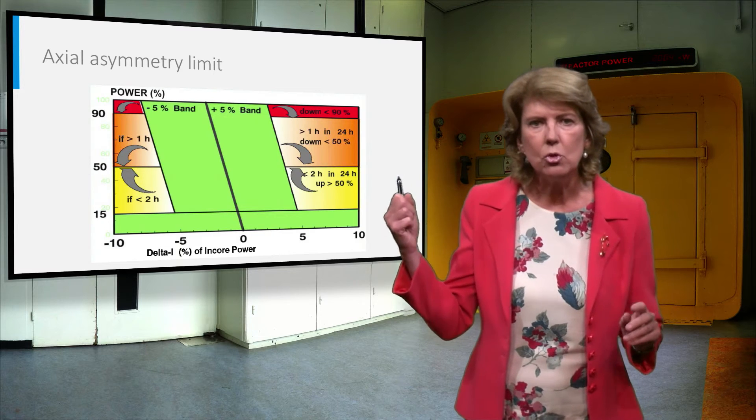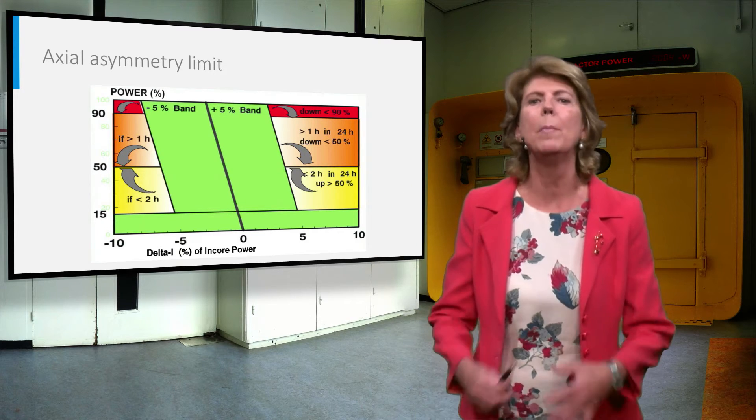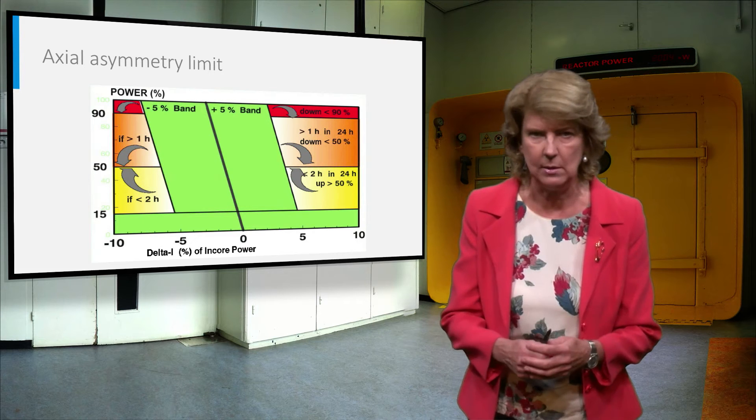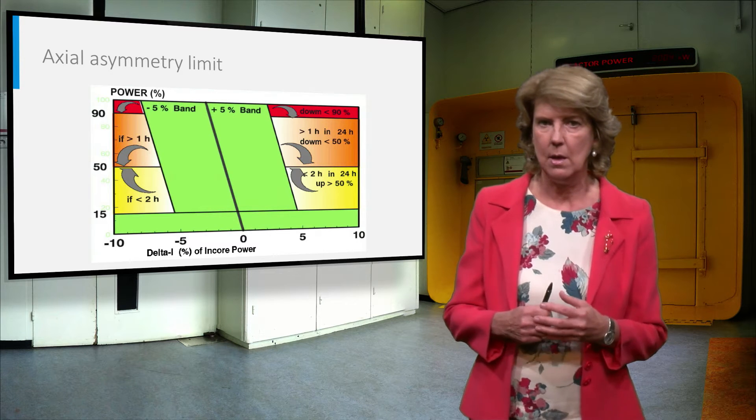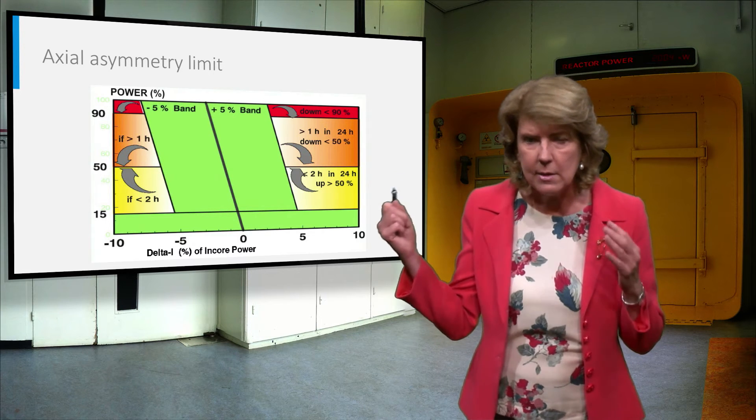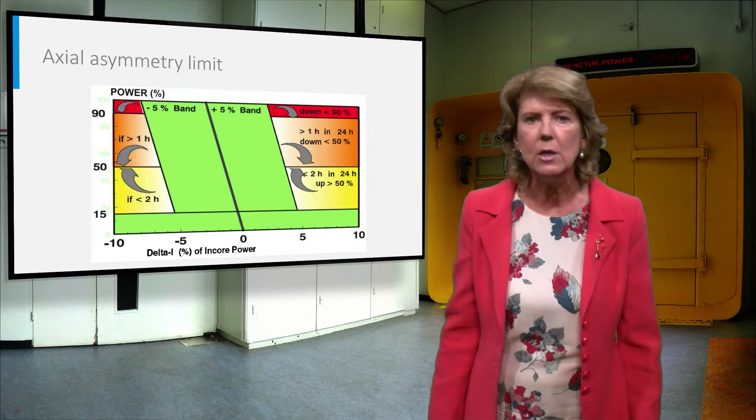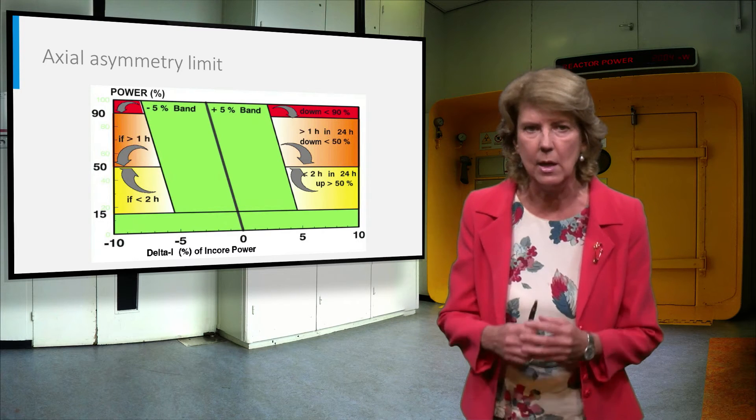The axial asymmetry imposes some restrictions on the power level. That means that if the asymmetry is high, the reactor power level is limited. The green area indicates the allowed combination of power and axial asymmetry.